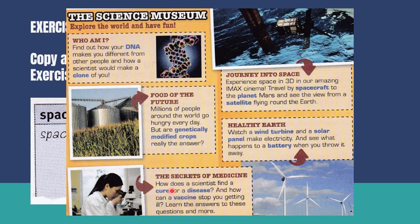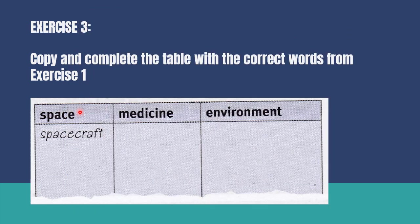For example, take the word 'vaccine.' Is it about space? Does it have anything to do with angkasa? Or is it about medicine? Is it related to ubat-ubatan? Or is it about the environment? I think vaccine belongs under medicine, so I'll write it there. You do the rest of the words the same way — look at which category each one belongs to.